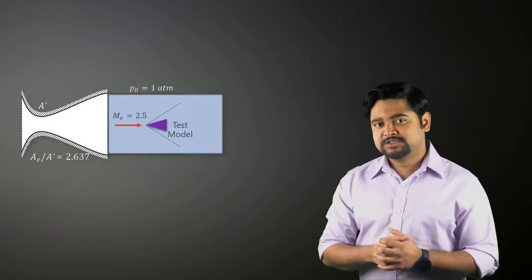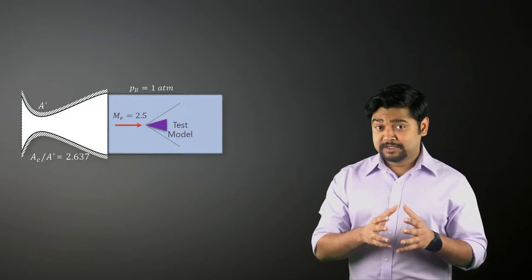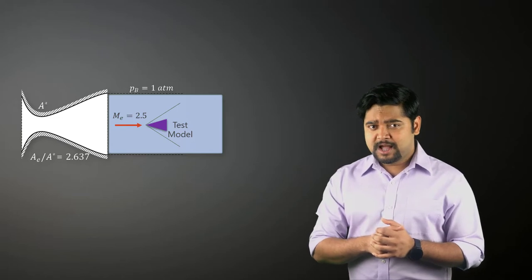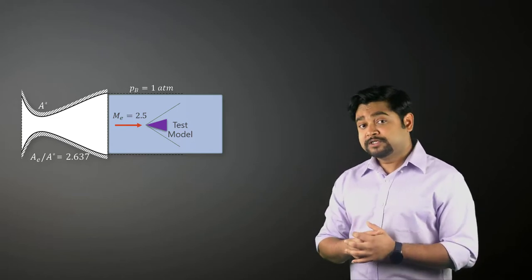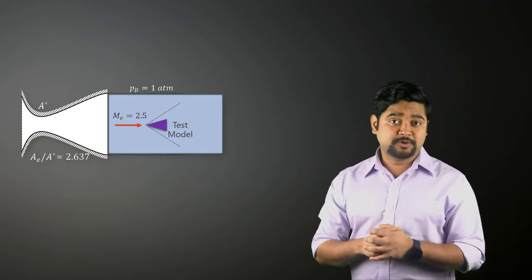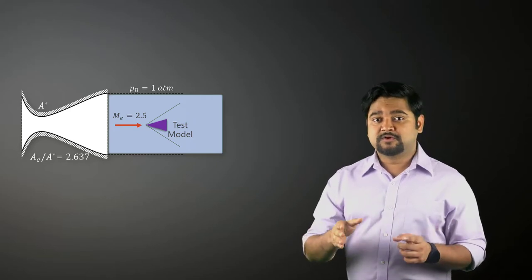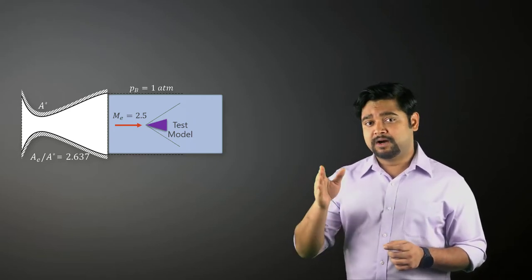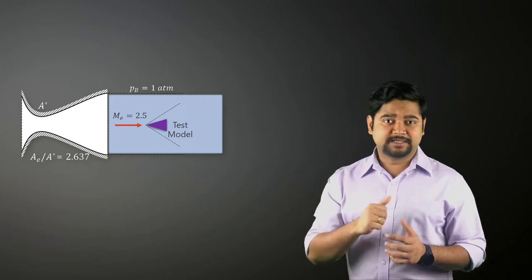So we start with the converging-diverging nozzle with an area ratio of 2.6 and we also need to establish a pressure ratio of 17.09 across the nozzle for a shock-free expansion of Mach 2.5 at the exit.